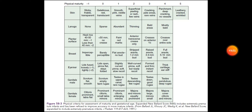For female genitals: clitoris prominent with labia flat carries negative one point. Prominent clitoris with small labia minora carries zero points. Prominent clitoris with enlarging minora carries one point. Majora and minora equally prominent carries two points. Majora large while minora small carries three points. Majora covering clitoris and minora carries four points.